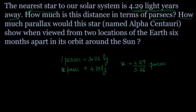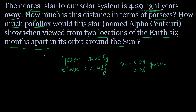Next they ask: how much parallax would the star Alpha Centauri show when viewed from two locations of the earth that are 6 months apart in its orbit around the sun? Six months apart indicates diametrically opposite points. The earth subtends a parallax angle phi, and theta is half of phi. This is the sun, and this is the earth.